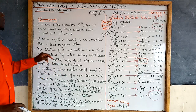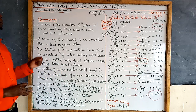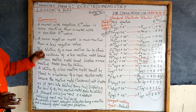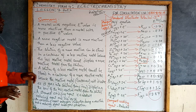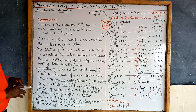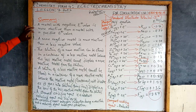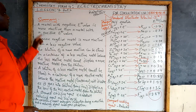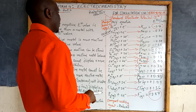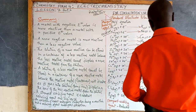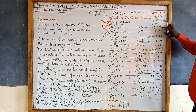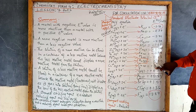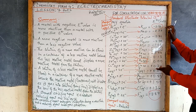Hello guys, welcome back to lesson 7 part 2, the continuation to wind up what we did in part 1. In summary, what we discussed in lesson 7 is that a metal with a negative E value is more reactive than a metal with a positive E value. For example, potassium has a negative value and copper has a positive value — we know potassium is more reactive than copper.